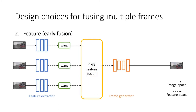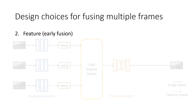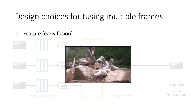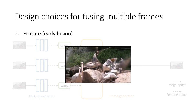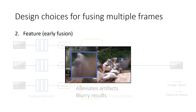Alternatively, one can also fuse the aligned frames in the feature space. Fusing in the high-dimensional feature spaces allows the model to be more robust to flow accuracy. However, rendering the fused feature map using a neural image translation decoder often leads to blurry outputs.